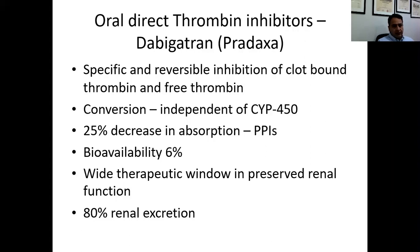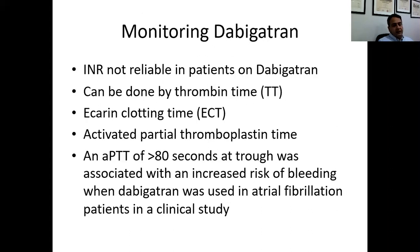The next agent that came to market is dabigatran, also known as Pradaxa. It provides specific and reversible inhibition of both clot-bound and free thrombin. Its conversion is independent of CYP450. PPIs given in conjunction with dabigatran can reduce its absorption by as much as 25%. There is a wide therapeutic window in preserved renal function, and it is 80% renally excreted — something to keep in mind when administering dabigatran to patients with reduced renal function. INR is not reliable for monitoring dabigatran activity.